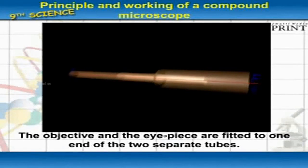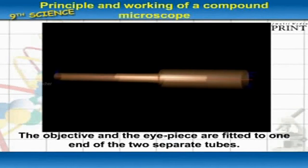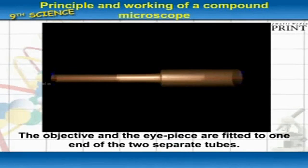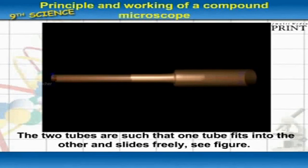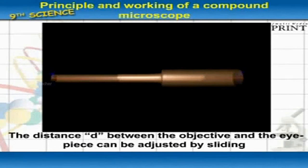The objective and the eyepiece are fitted to one end of two separate tubes. The two tubes are such that one tube fits into the other and slides freely.